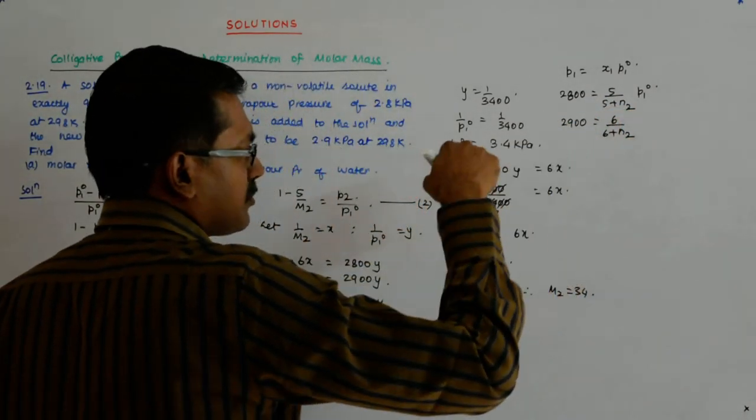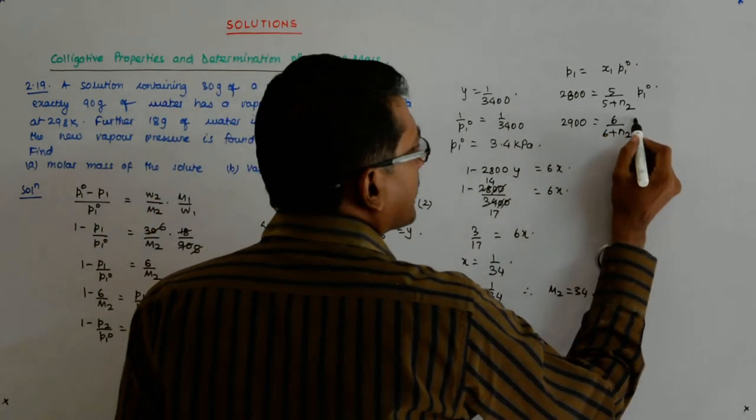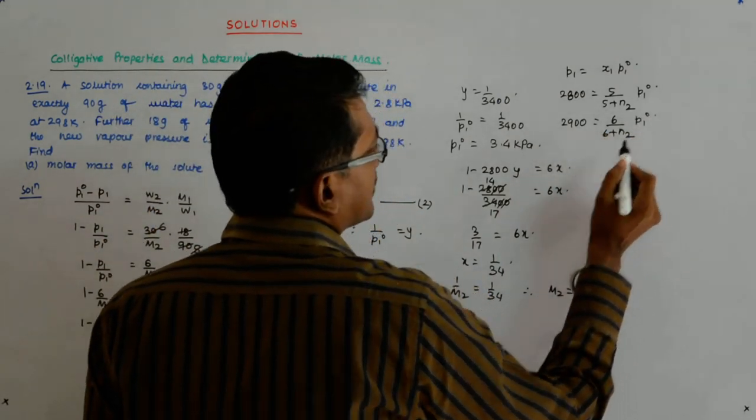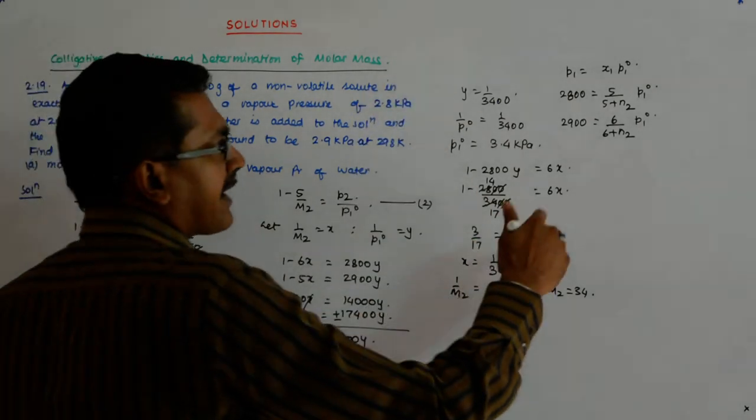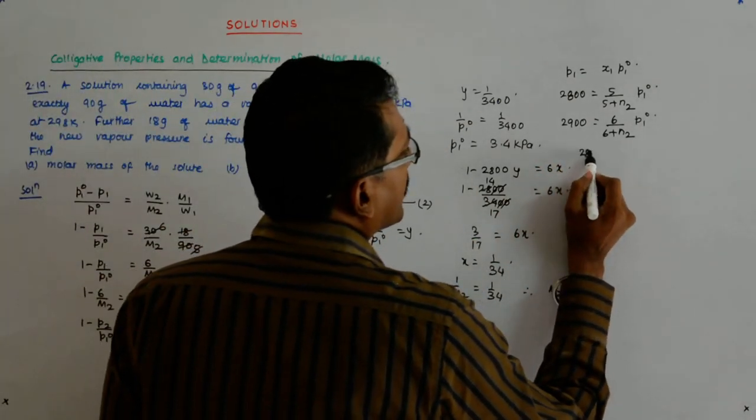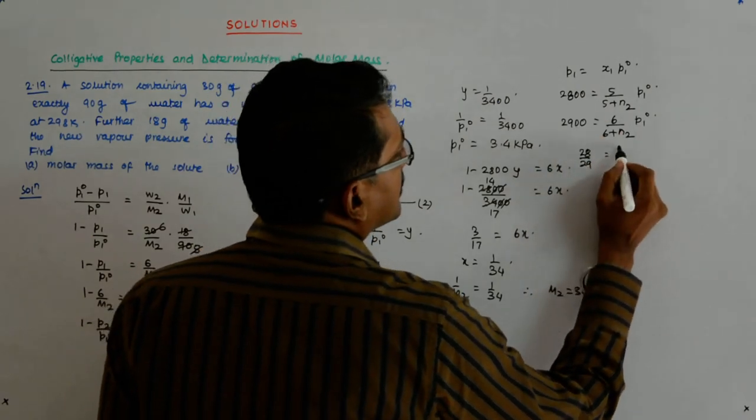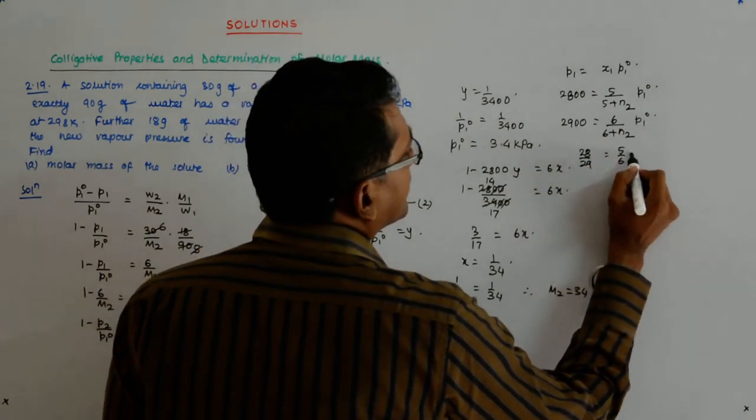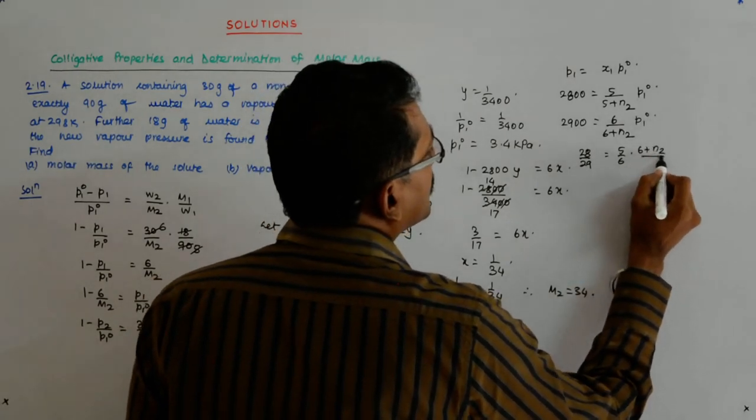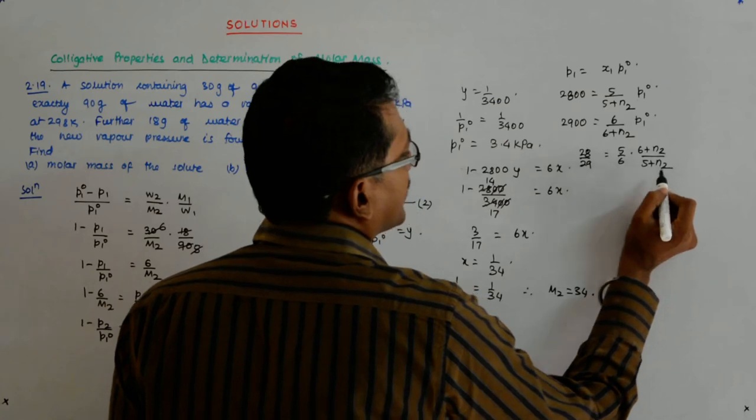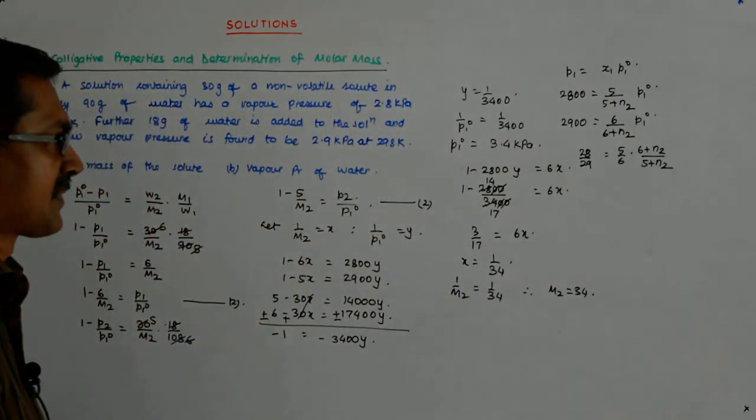I got confused. I thought this is mole fraction. So this is mole. So mole remains the same. This is rather easier to solve than what we did. If you straight away divide it, you get 28 upon 29, correct? Is equal to 5 upon 6 into, into 6 plus n2 divided by 5 plus n2. Is it not?